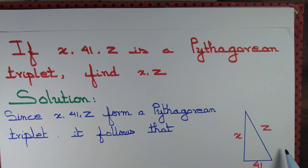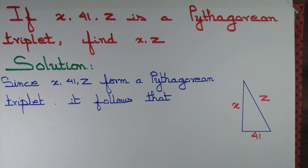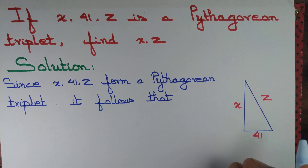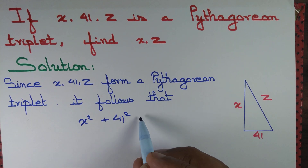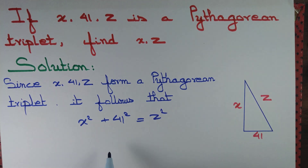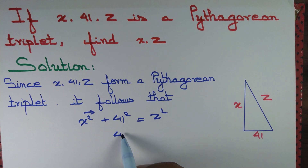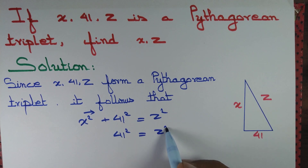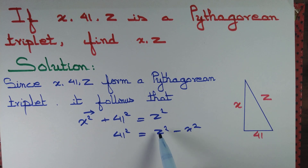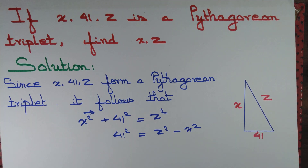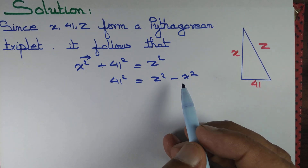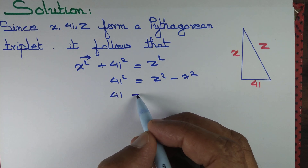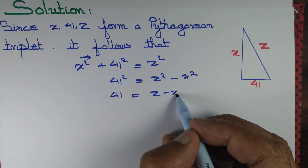Now this is a right angle triangle, so we can apply Pythagoras theorem. By Pythagoras theorem, x squared plus 41 squared equals z squared. We take x squared to the right hand side to obtain 41 squared equals z squared minus x squared. Now this is an expression of the type a squared minus b squared, and we know that a squared minus b squared can be written as (a minus b) into (a plus b).